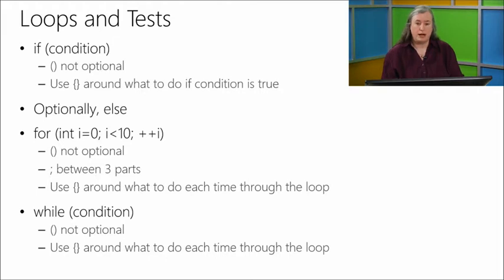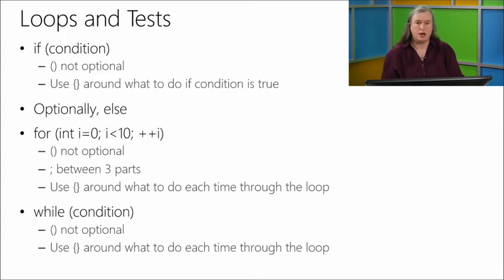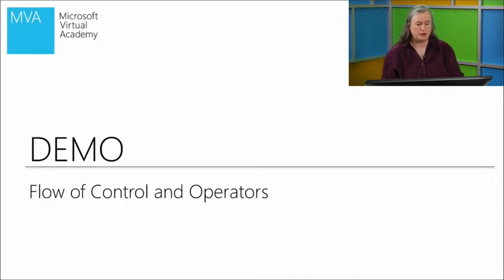Then we have a while, which is essentially just like a for, but it only has the condition part. It's up to you to do the initialization and also to do whatever moves you on to the next time around through the loop. Other than that, while and for have no significant difference, only a syntax difference. I think these are easiest to understand by watching the debugger step through some code, so let's do that.